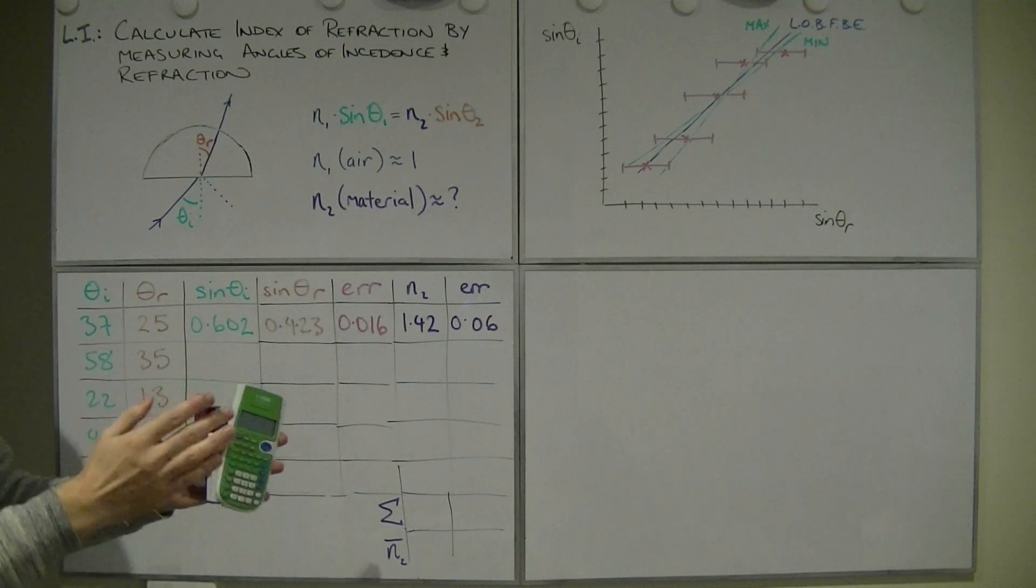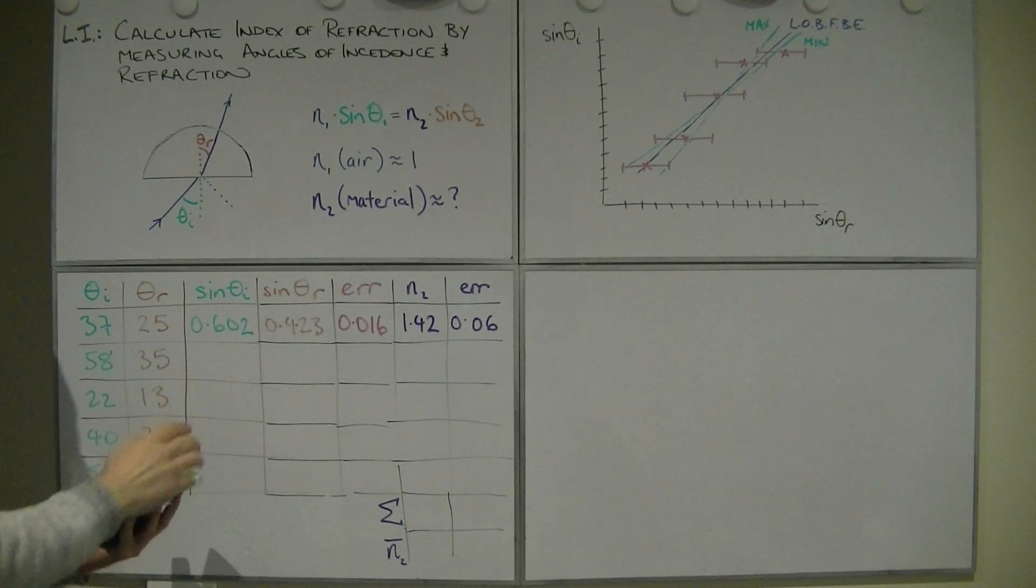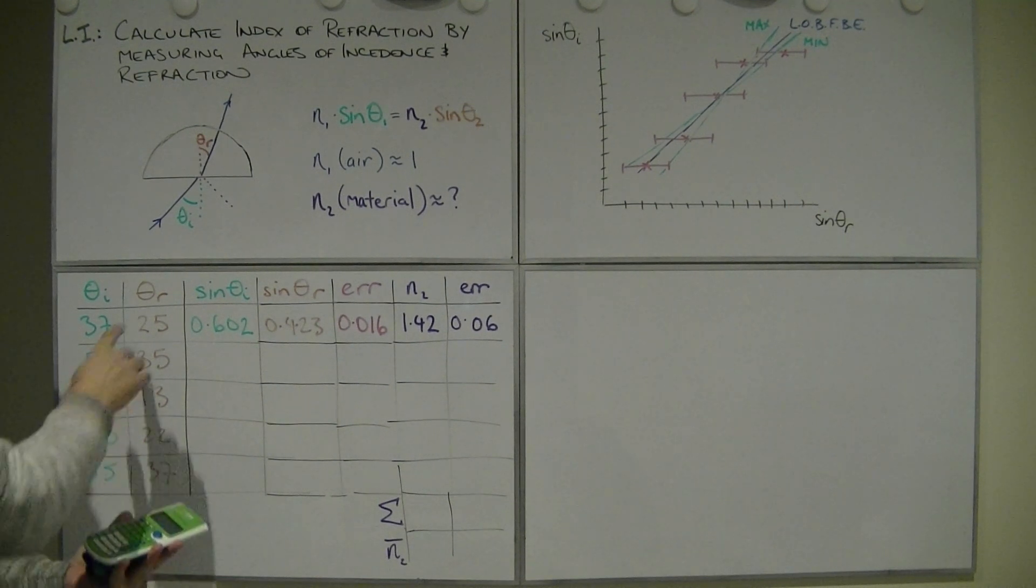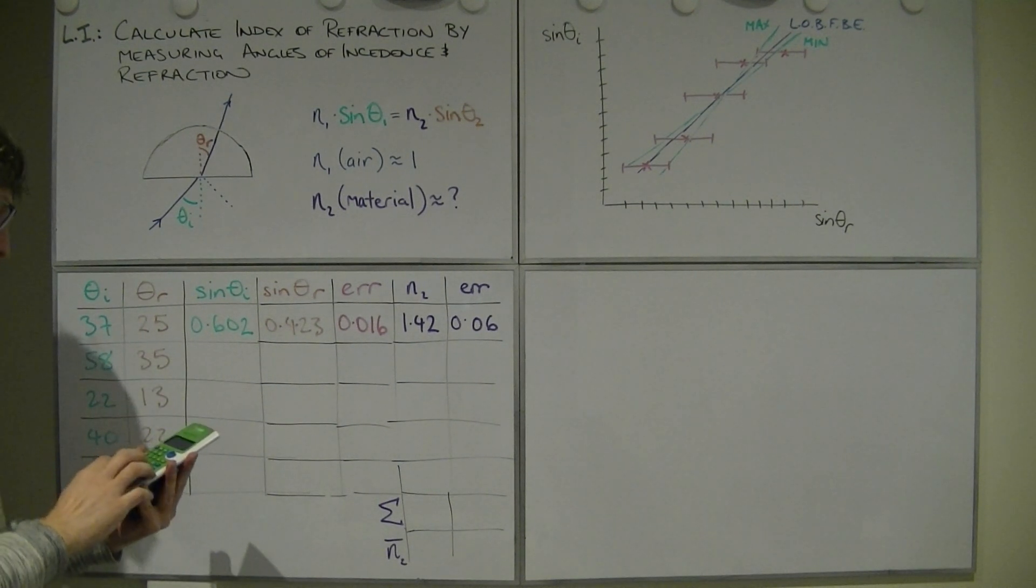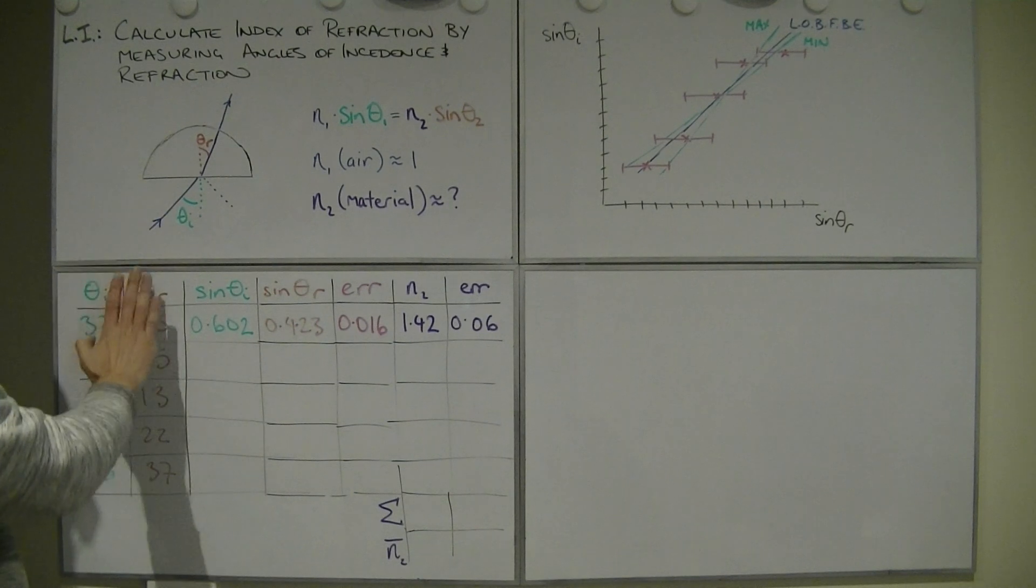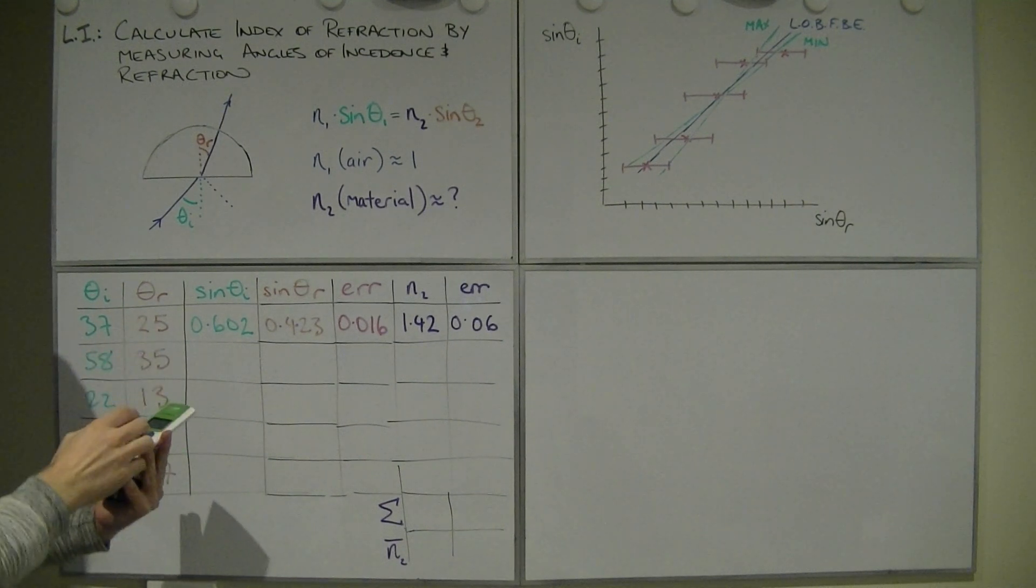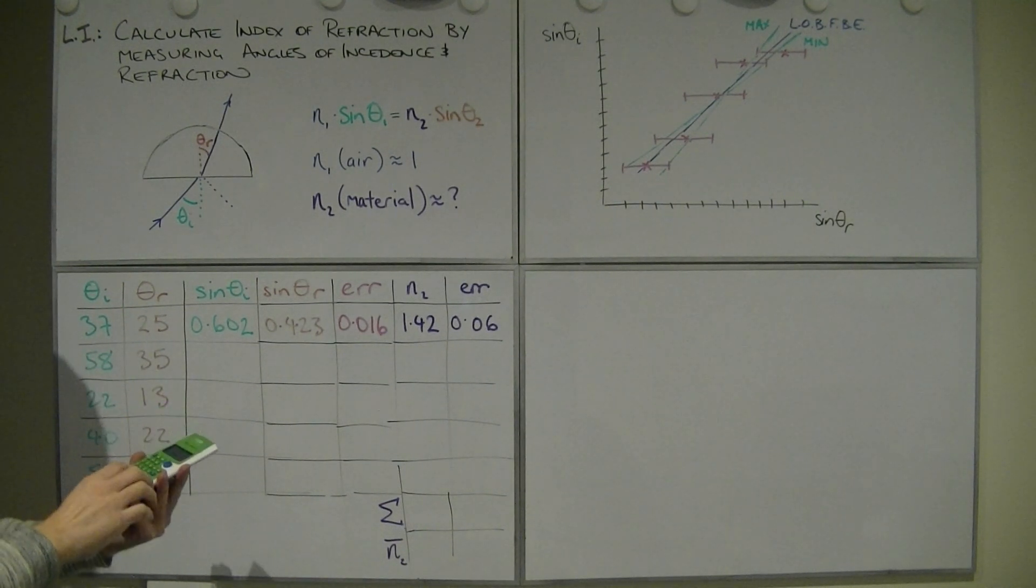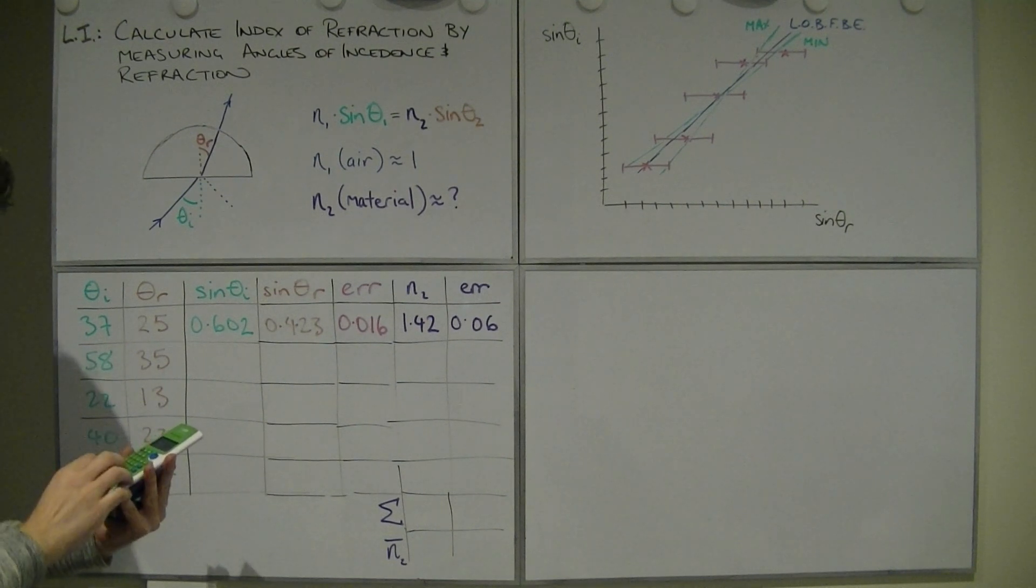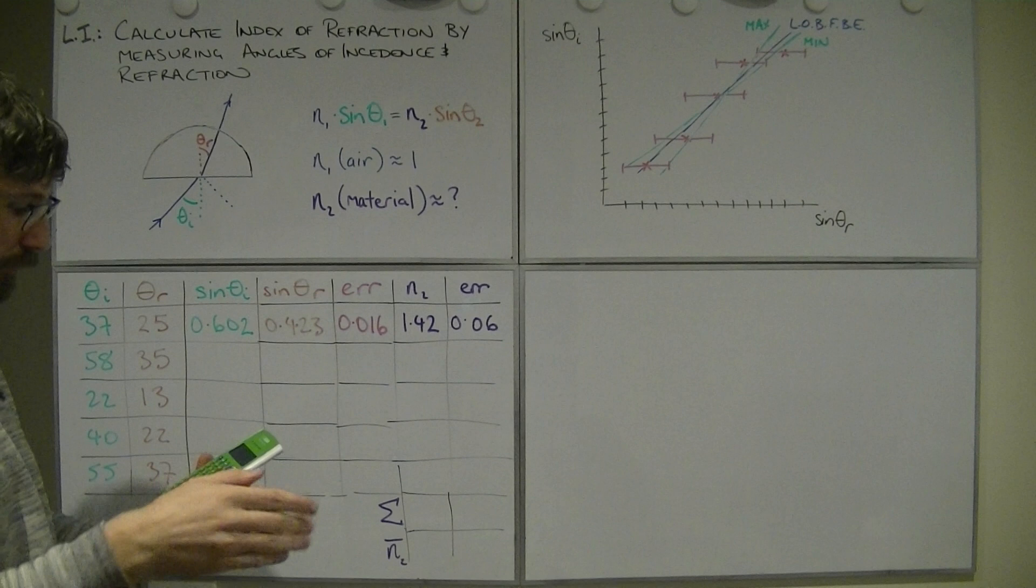And the angle of refraction is the thing that we're struggling to measure. So, if we take sine of 24, because I'm going to say that, oh, I reckon that we measured that correct to within one degree. So I'm going to say 24, okay, and then the difference of that and 25 gives me 0.0158-ish.